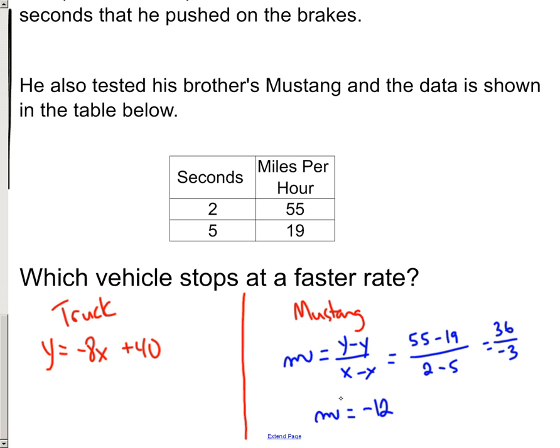So the Mustang's got a rate of change of about negative 12 miles per hour per second. So basically the speed's going to be dropping by 12 miles per hour every second that you step on the brakes. Now over here, my slope is just the number sitting in front of this x, because this is slope-intercept form. So my slope, or my rate of change, is negative 8. And that means that the miles per hour will drop 8 for every one second that you step on the brakes.